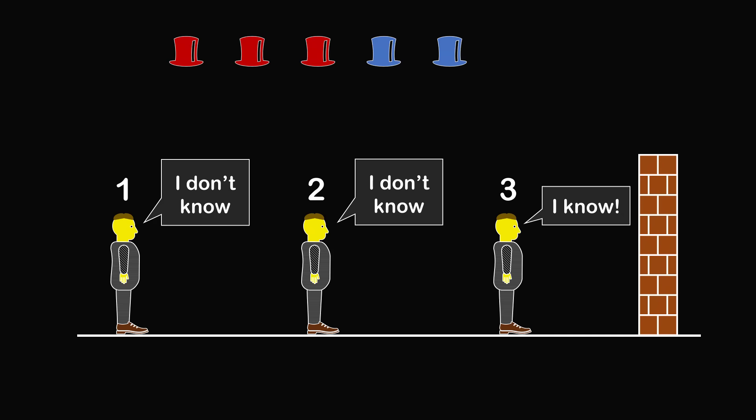So the question is, What was prisoner 3's hat color? And how did he know? These logic puzzles always have a sense of impossibility to them. How could hearing, I don't know, from prisoners 1 and 2 lead to prisoner 3 knowing his hat color? The key is that the setup of the problem and each prisoner's response is actually providing information to prisoner 3. So let's see how this works out step by step.